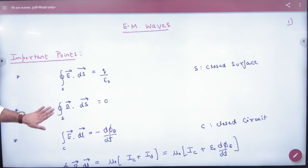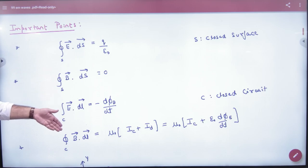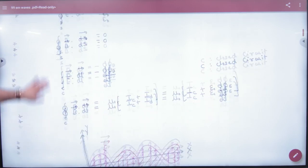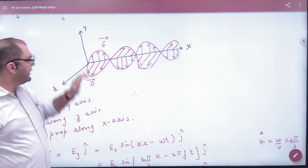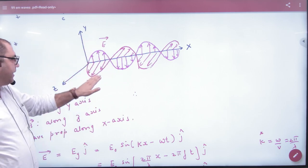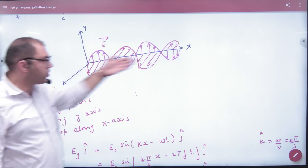We have already done sheet number 99. There are four equations to define electromagnetism. For an EM wave, how does it travel? Electric field is in the y-axis, magnetic field is in z, and wave propagation is in x.